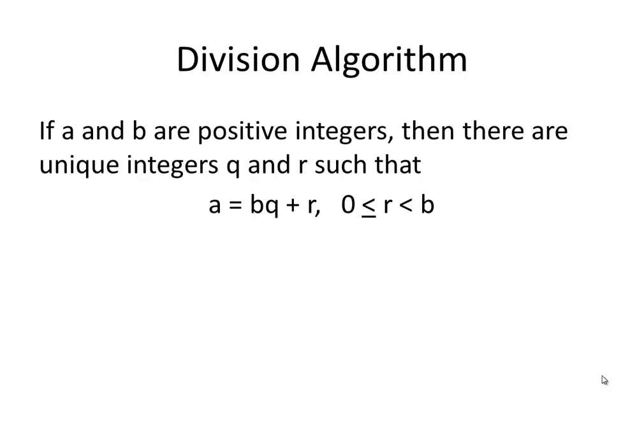Now we have our division algorithm. It says if A and B are positive integers, then there are unique integers Q and R, such that A is equal to B times Q plus R, where 0 is less than or equal to R is less than B.